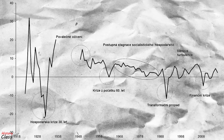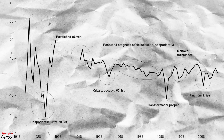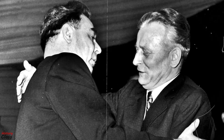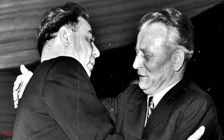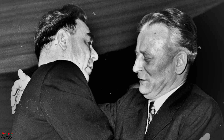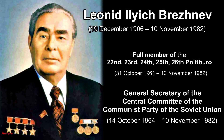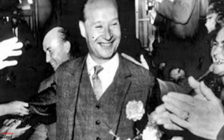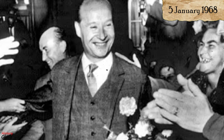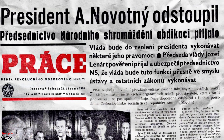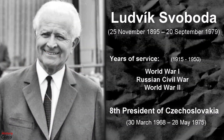Novotny's attempt at restructuring the economy — the 1965 new economic model — spurred increased demand for political reform. Novotny invited Soviet Secretary-General Leonid Brezhnev to Prague in December 1967 seeking support, but Brezhnev was surprised at the extent of opposition to Novotny and supported his removal. Dubček replaced Novotny as First Secretary on 5 January 1968. On 22 March 1968, Novotny resigned the presidency and was replaced by Ludvig Svoboda, who later gave consent to the reforms.